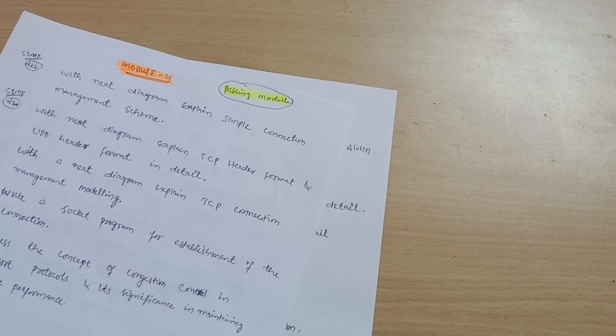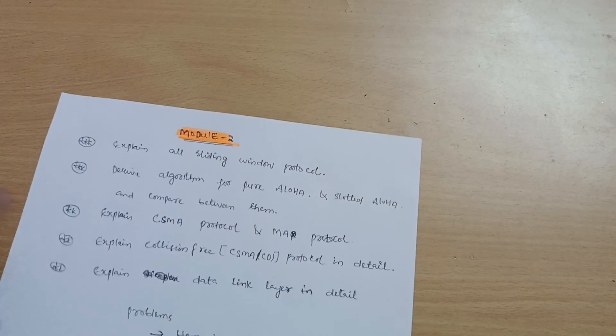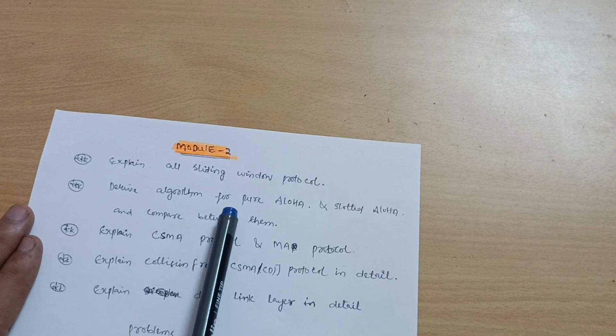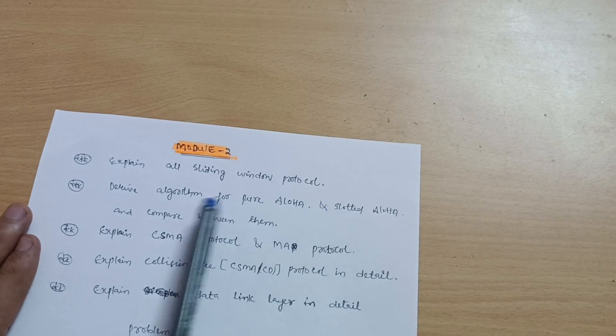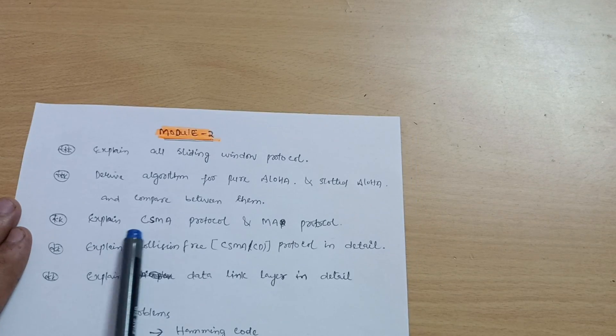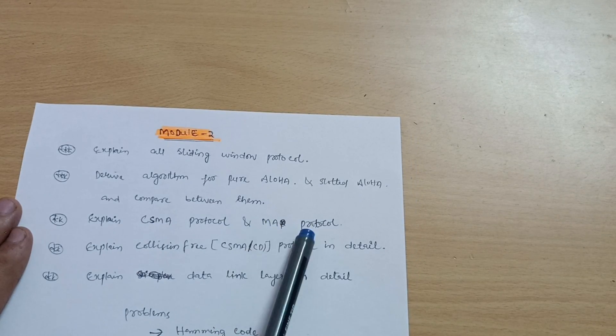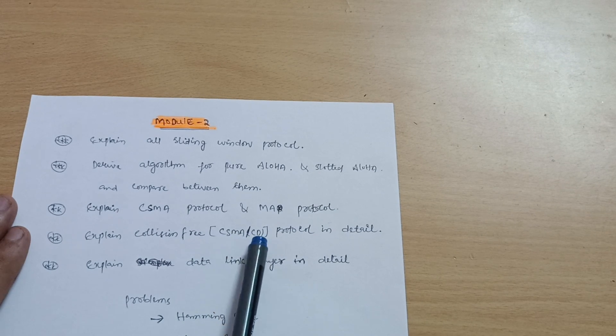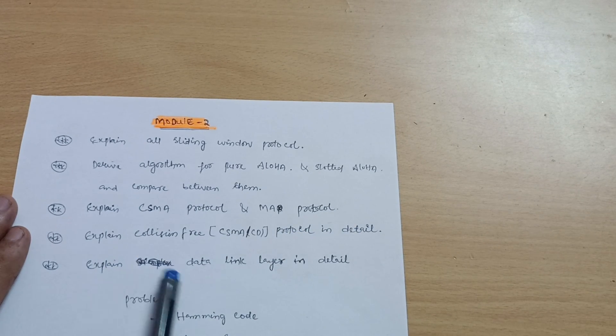Next is Module 2. Here we have: Explain all sliding window protocols. Derive algorithm for pure ALOHA and slotted ALOHA and compare between them. Explain CSMA protocol and MAC protocol - most important one. Explain collision-free CSMA/CD protocol in detail. Explain data link layer in detail.